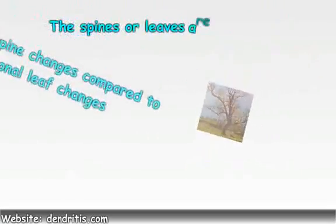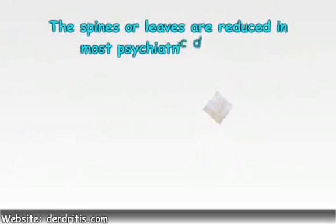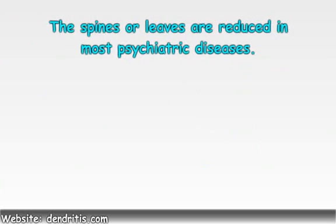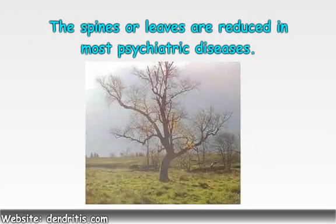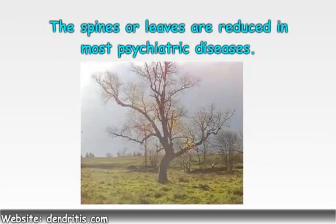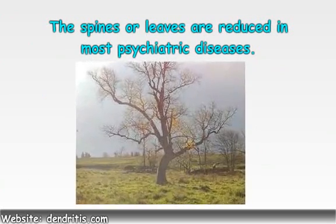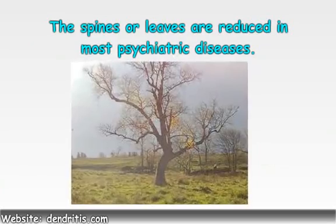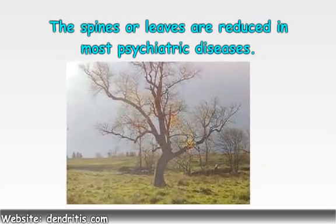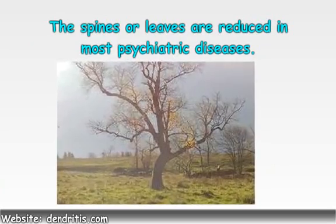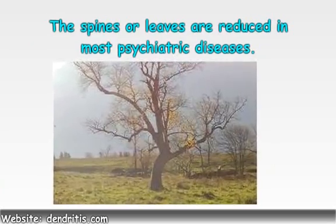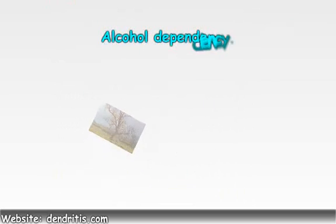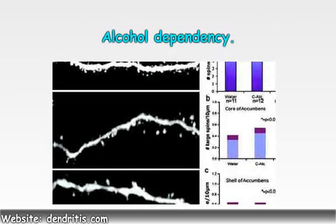The spines, or leaves, are reduced in most psychiatric diseases. These include schizophrenia, alcohol and drug dependency, anxiety, depression, autism, Alzheimer's disease, stroke, and head injury. These are photographs showing the reduction in spines or leaves in alcohol dependency.